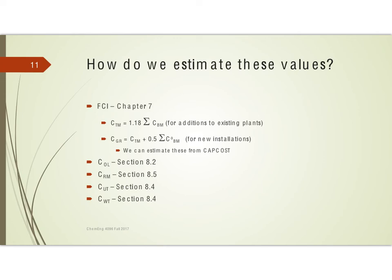For the values we need to plug in: the fixed capital investment comes from chapter 7 — use the total module cost for additions to an existing plant, or the grassroots cost for a brand new plant, estimated using CapCosts. In future lessons we will look at ways to estimate operating labor, raw materials, utilities, and waste treatment costs. Thank you very much for your time.